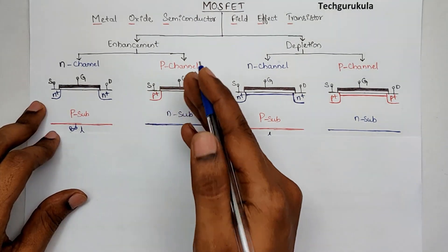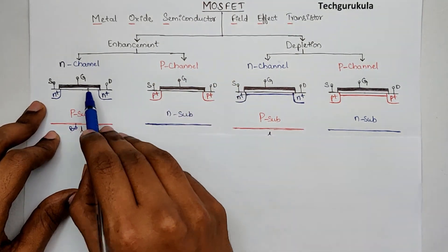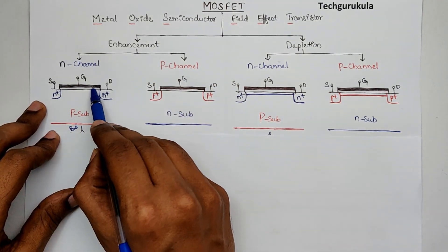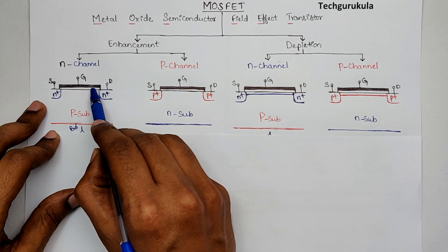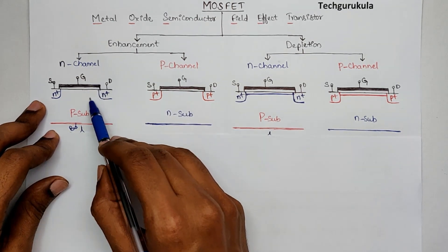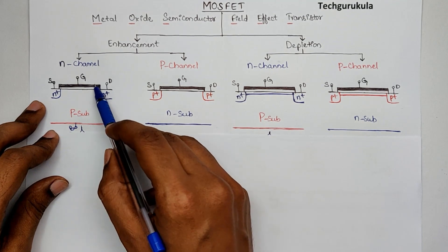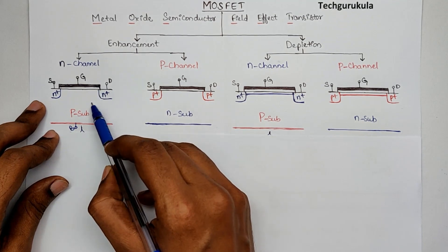We have already seen the MOS capacitor in the previous videos. This is the metal, this is the oxide, and this is the semiconductor — that's why it is called MOS.